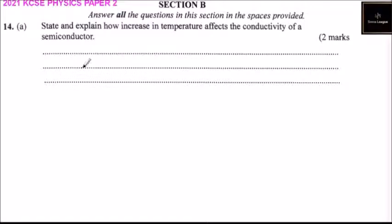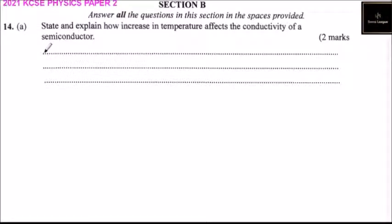You get two marks for this. As temperature increases, more electrons get the energy to jump from the conduction band to the valence band, and thereby increases the conductivity of a semiconductor. So an increase in temperature increases the conductivity of a semiconductor.